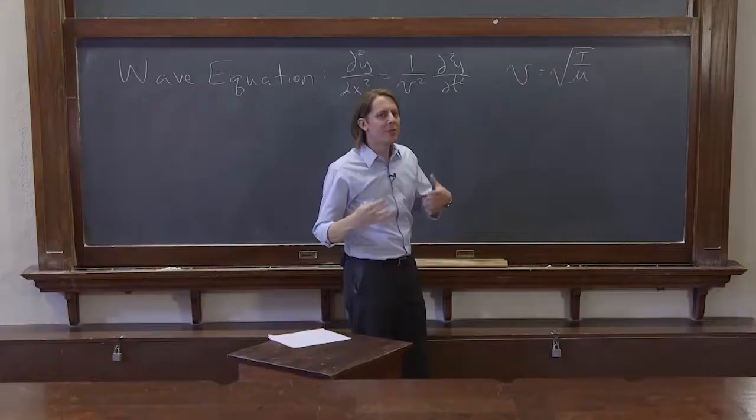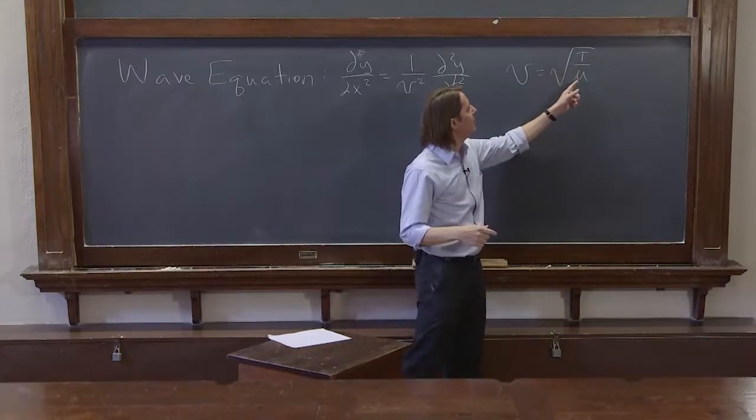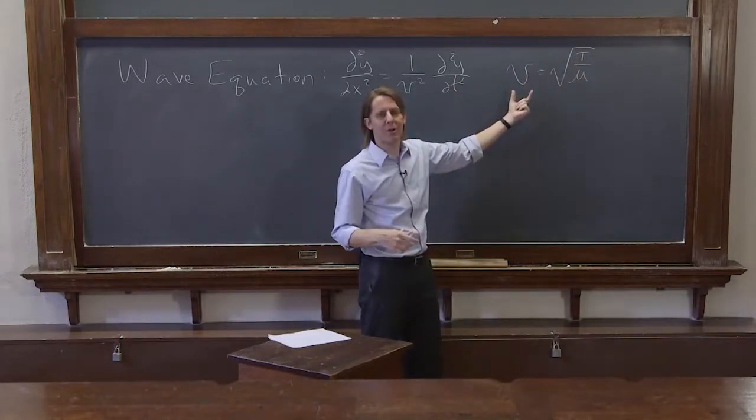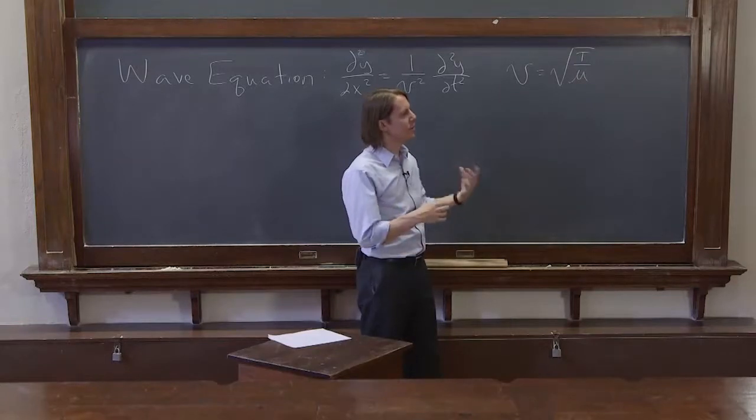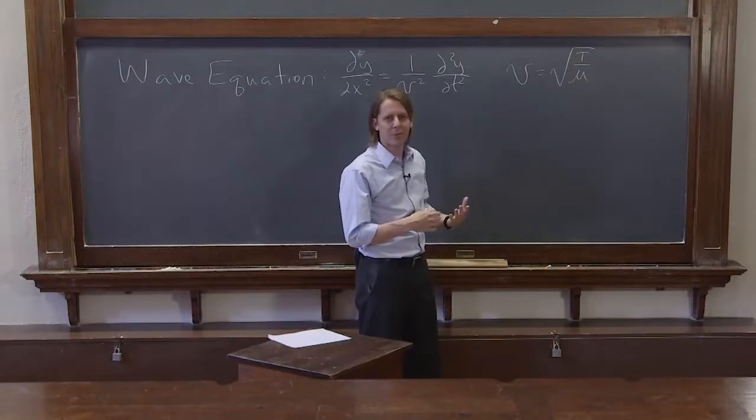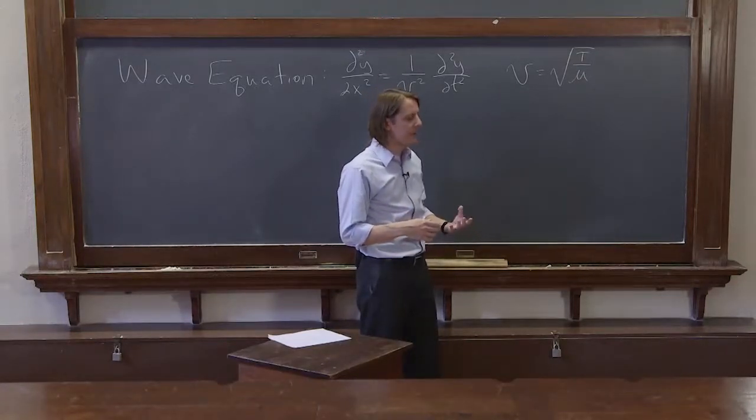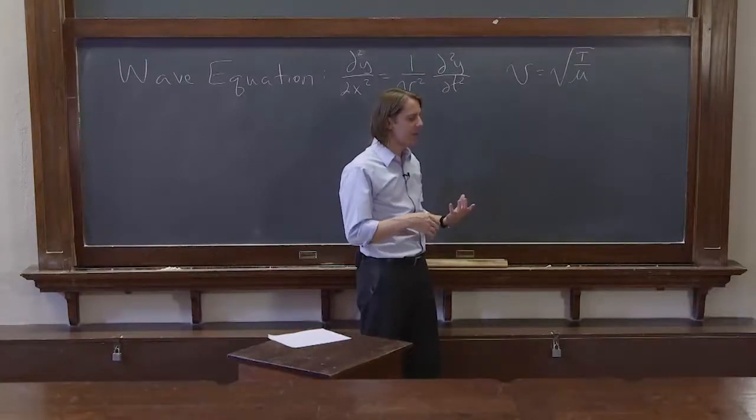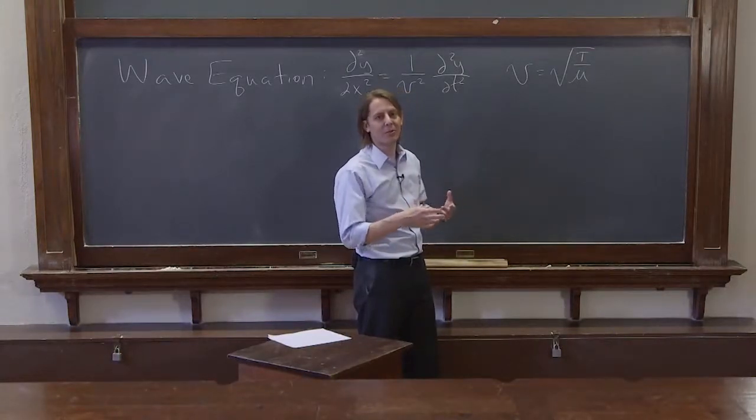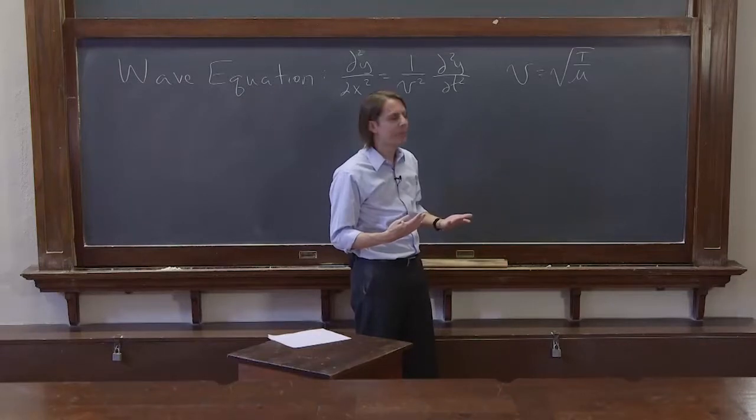So the continuum, the string, has a tension and a mass density, and this is just a way to combine those to get yet another property of the string. It's just like the natural frequency of a simple harmonic oscillator. For a mass and a spring, if it had a mass m and a spring constant k, we combine those to make this other natural property, the natural frequency, square root of k over m.